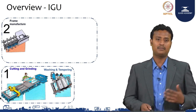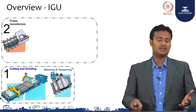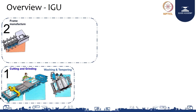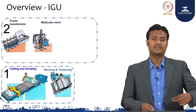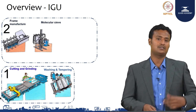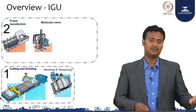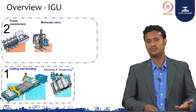The IGU process starts with frame manufacturing. The aluminum channel comes in running meters — based on your size, you have to either cut or bend it. If you cut it, you use a corner key to join it; if you bend it, only two bends are required at the top and bottom, with one more corner possible. After bending, or before bending, the molecular sieve desiccant can be filled into the hollow aluminum channel — either manually or using automatic or robotic machines.